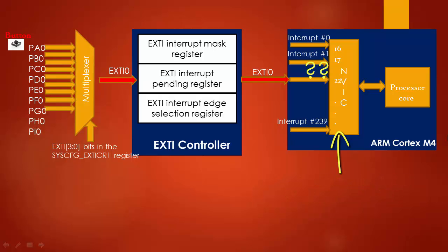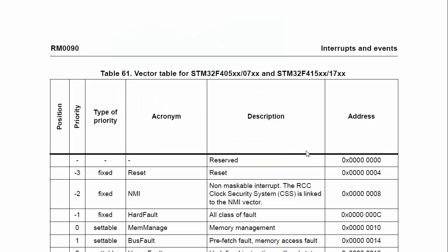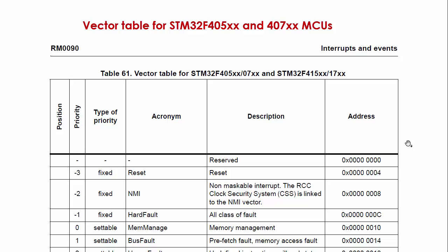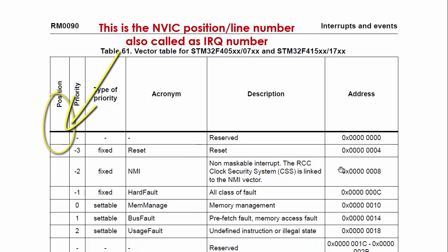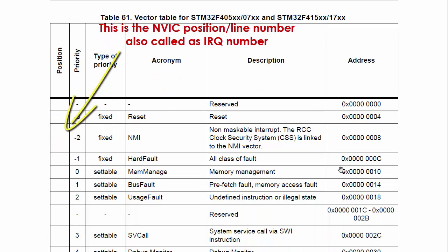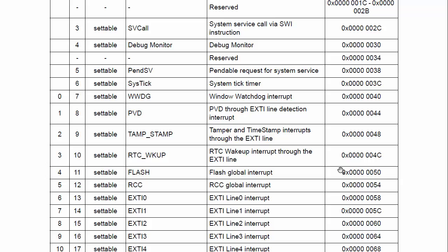To find out the IRQ numbers, you have to refer to the vector table given by your MCU vendor. For the 407XX microcontroller, this is the table you have to refer to. This table has different columns. The first column is the position, which is also called the IRQ number — meaning the position on the NVIC where an external interrupt is connected.